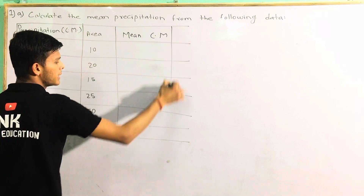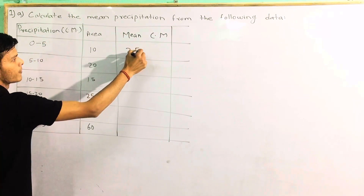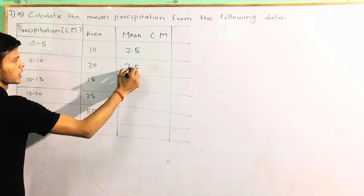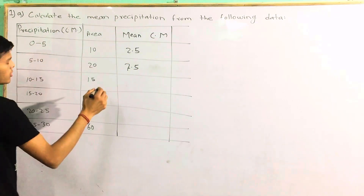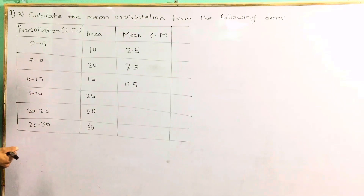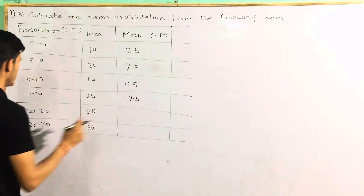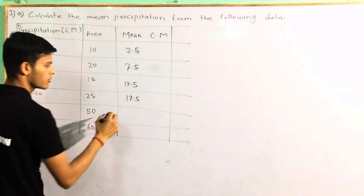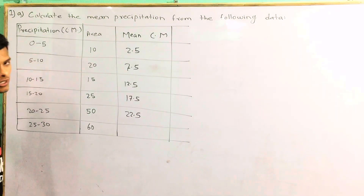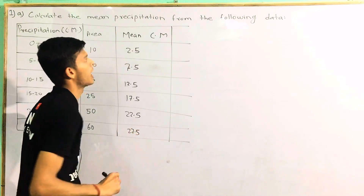Now, if you look at the mean: divide by 2, it is 2.5. Divide by 2, it is 7.5. Divide by 2, it is 12.5. Divide by 2, it is 17.5. Divide by 2, it is 22.5. Divide by 2, it is 27.5. Divide by 2, it is 23.5.